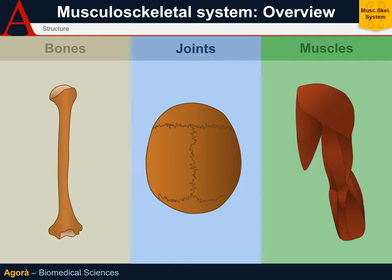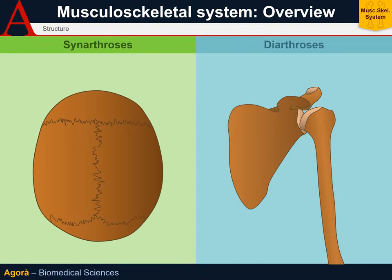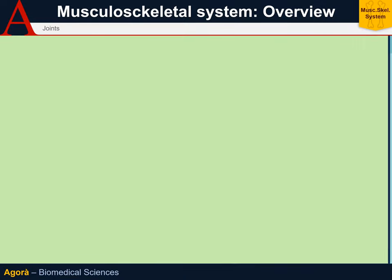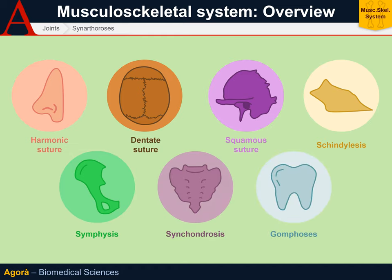Let's move on to the joints. Joints are structures that join two or more bones and do not necessarily result in mobility. The first distinction is between synarthrosis, which are fixed joints, and diarthrosis, which are mobile joints. Among the synarthroses, the most important and prevalent are the sutures. The two articular surfaces are almost completely complementary, connected by a very thin layer of fibrous connective tissue. Sutures do not allow mobility.